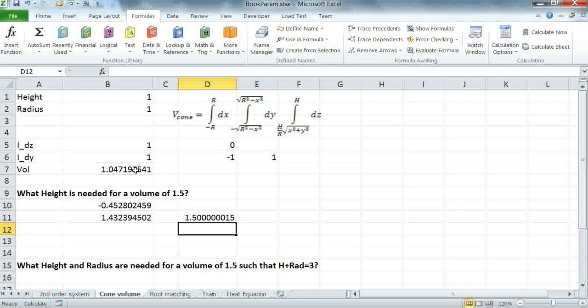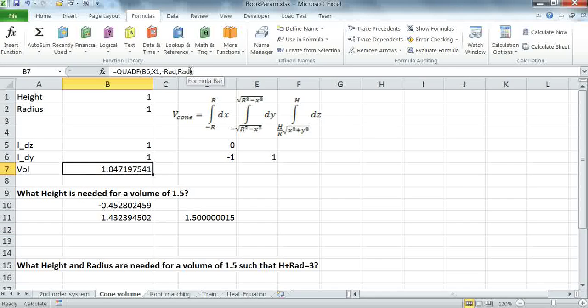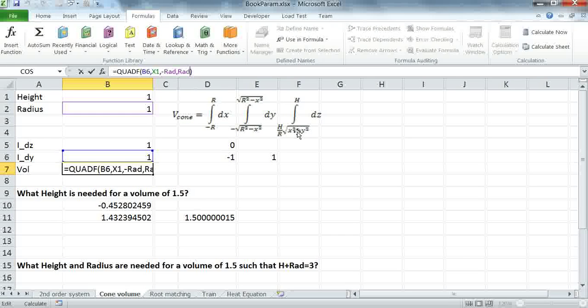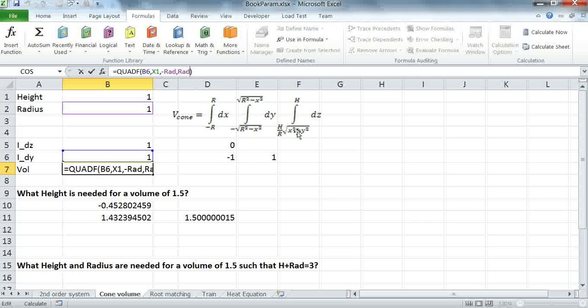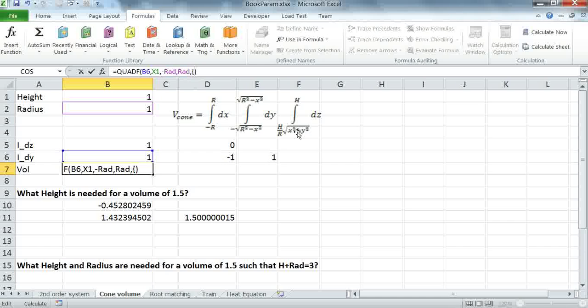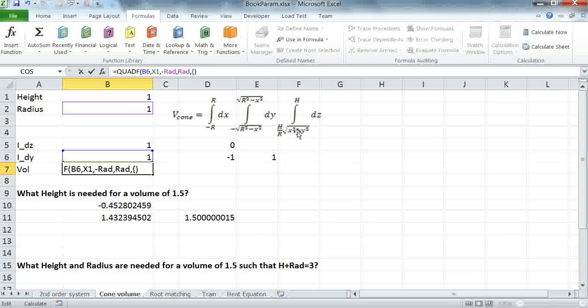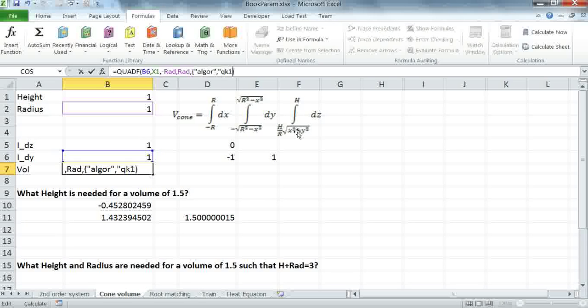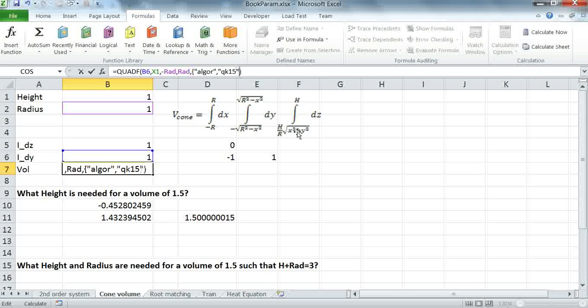Now, one thing to demonstrate here is we are using the default algorithm for the integration, which is an adaptive algorithm, and it can be expensive in this kind of iterative optimization. So we might want to speed up the computation by selecting a fixed rule integration algorithm. I can do that by using the optional control argument, by specifying the algorithm for the outermost integration as QK15, which is a fixed rule integration using 15 points.